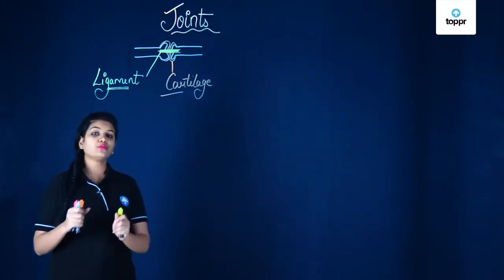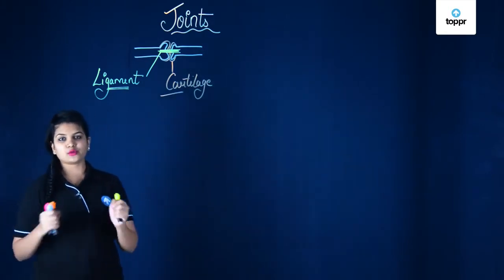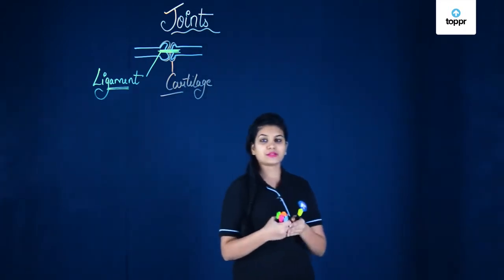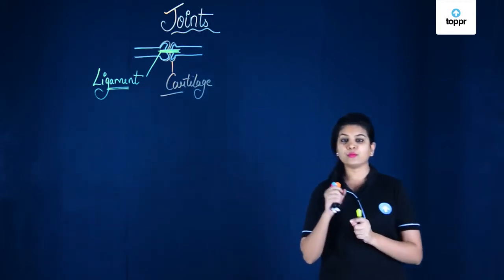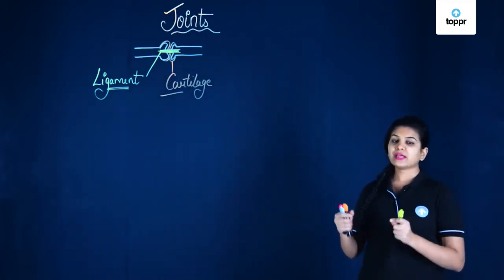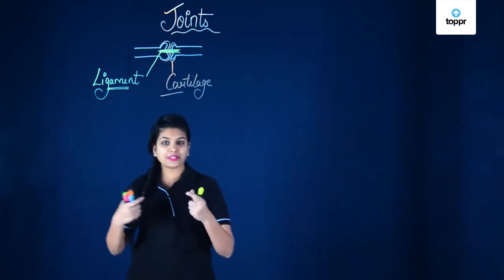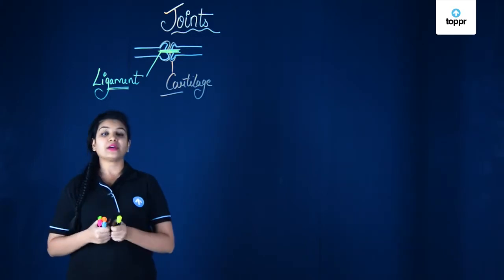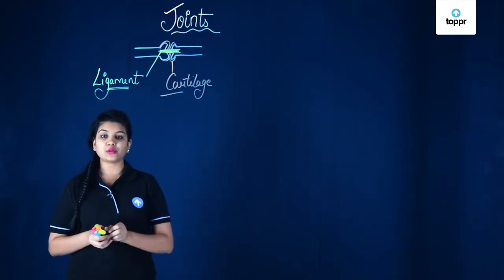In your body there are different types of joints. The question arises: how do we classify these joints? We classify them on the basis of movement. In our body there are different types of movement — there can be free movement, there can be very slight movement, or there can be no movement at all. On the basis of movement we can divide the different types of joints.